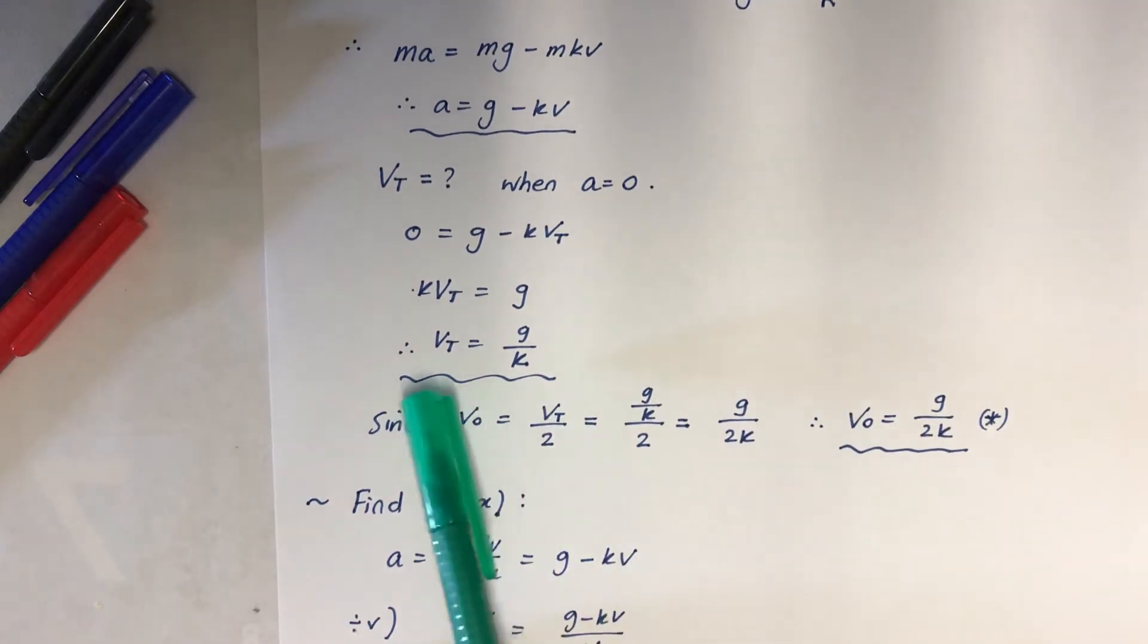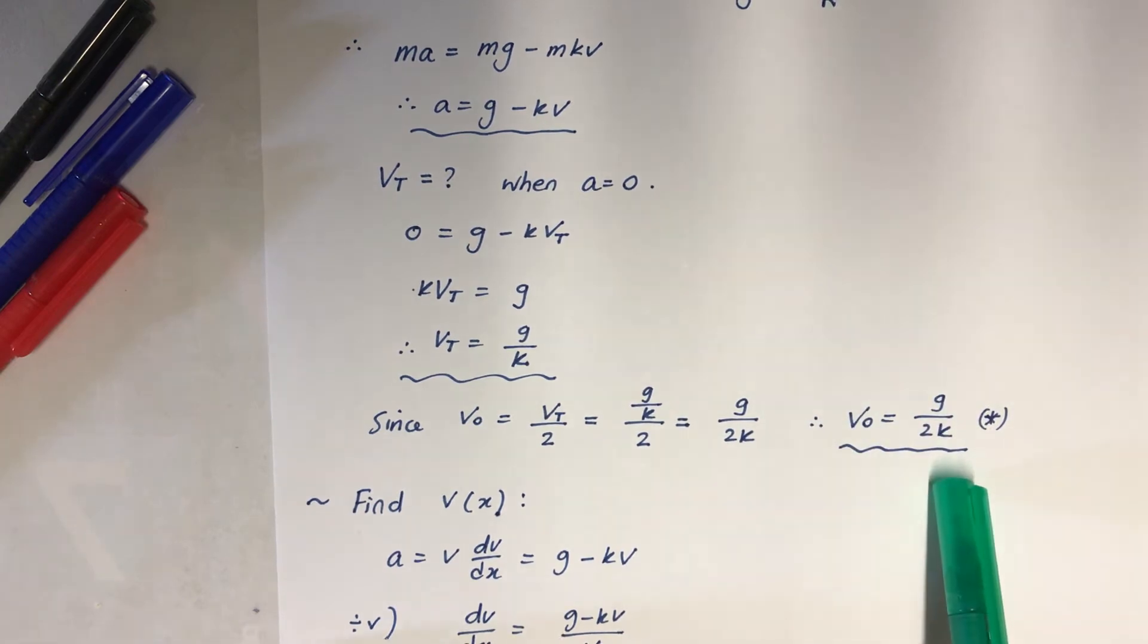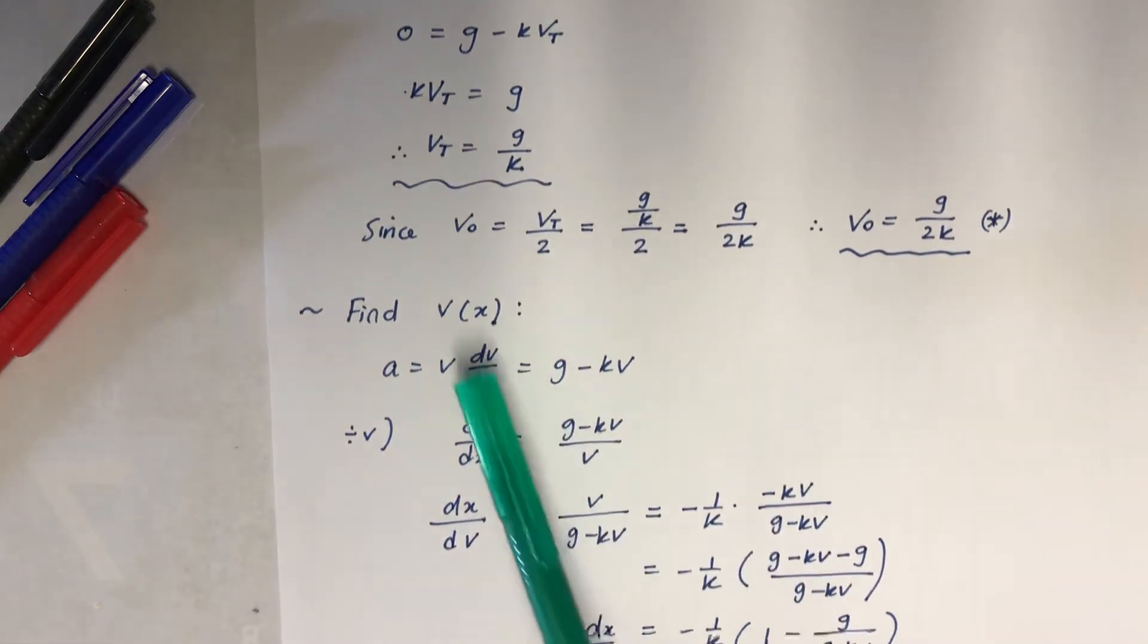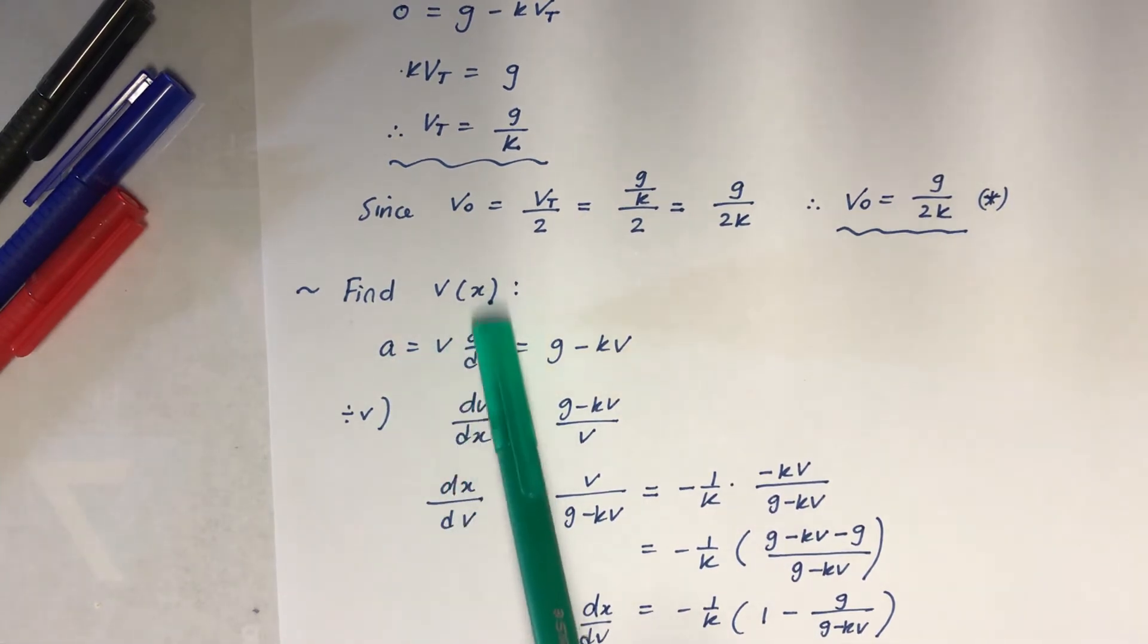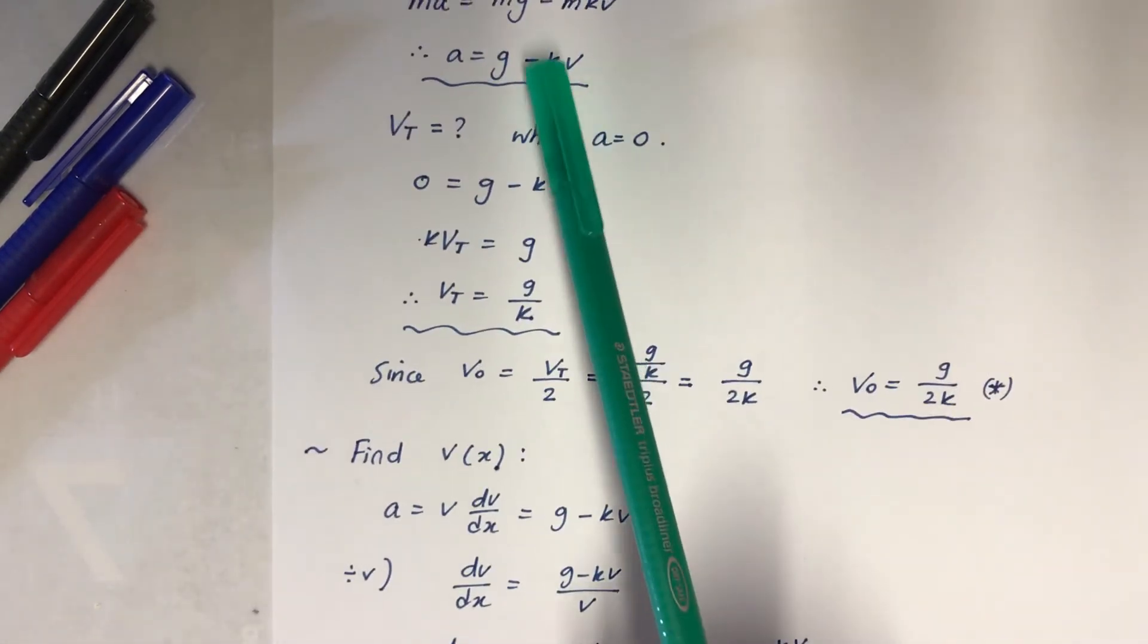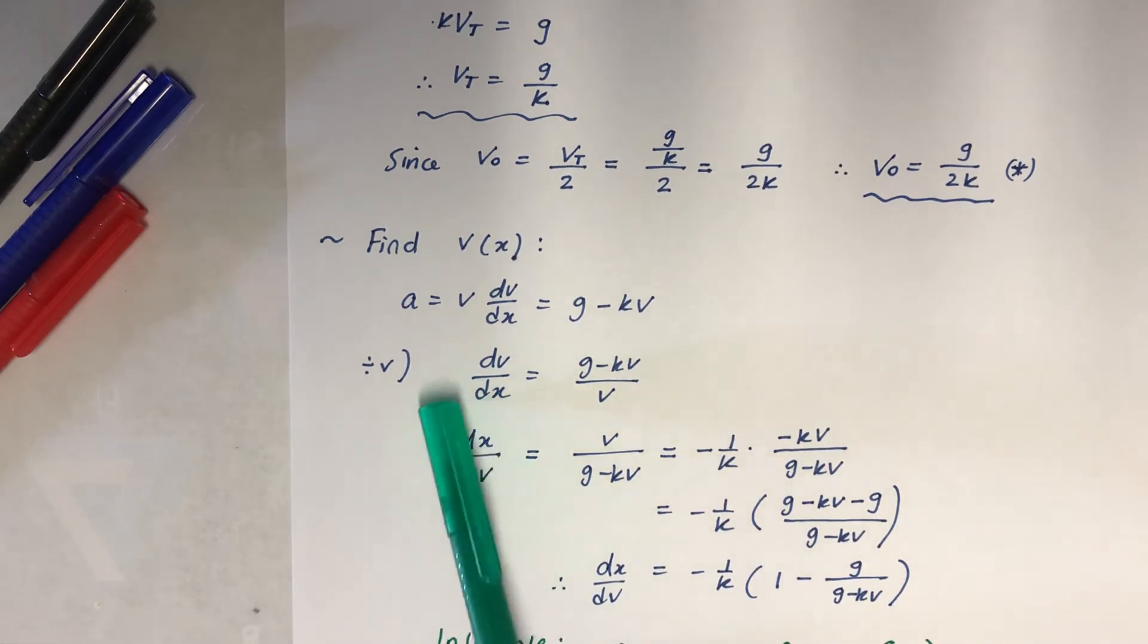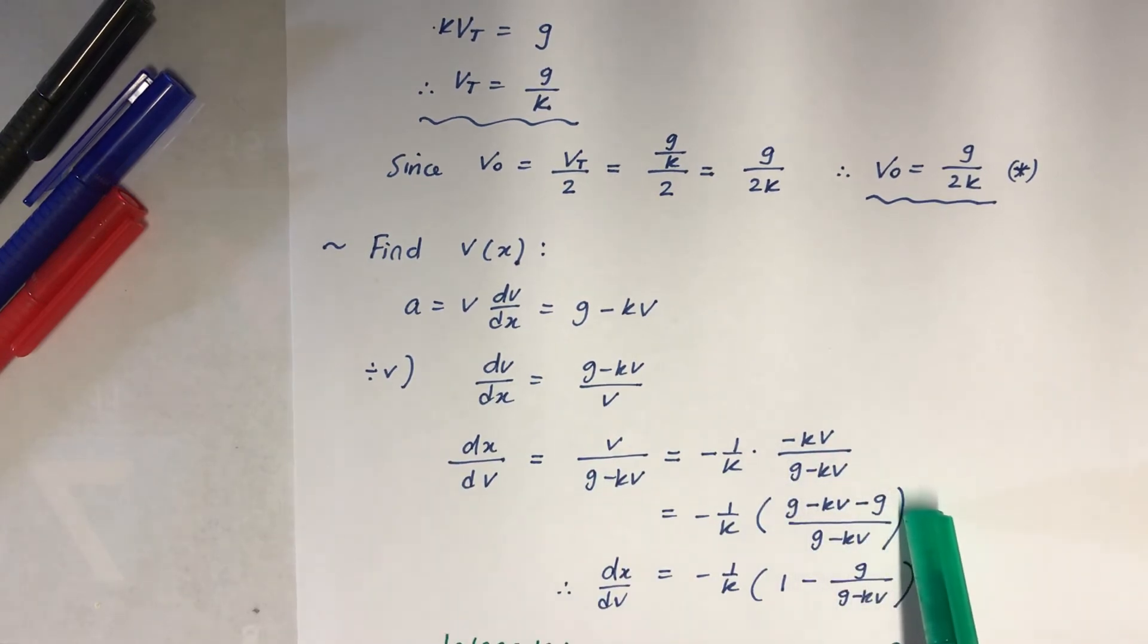A equals zero because it's constant, it becomes constant velocity. And then we'll get the VT equals G over K. So those are a few things we're going to have to use. And since V₀ was given, I'm going to substitute in there, and then I'll have V₀ of G over 2K. Now this is what we're going to use later on, so we had this to get to here. So let's find the V in terms of X. So obviously we need to use V dV/dX because we want an X term. So that's G minus KV, which is from right there. And then I'll just divide it by V. Why? Because I want to integrate.